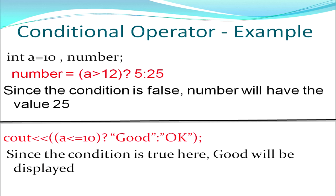In another example, "good" will be displayed if a is less than or equal to 10, and "ok" will be displayed if it is not less than or equal to 10. Since the condition is true here, "good" will be displayed. So the conditional operator works on the condition — the output is given according to whether the condition is true or false.